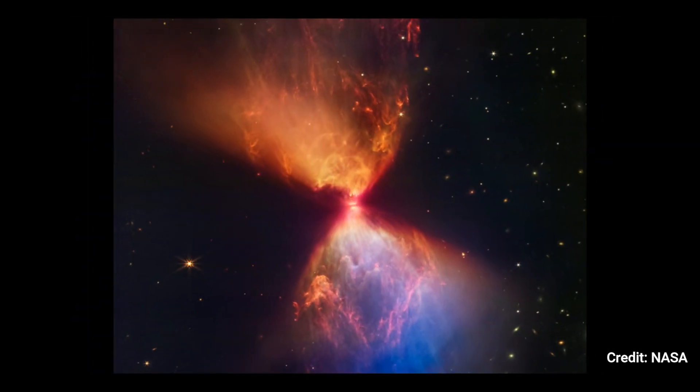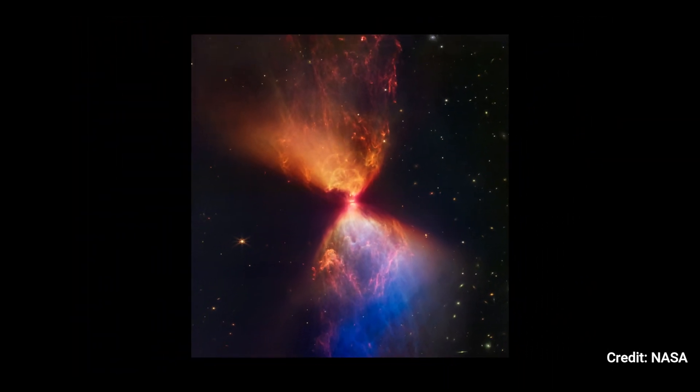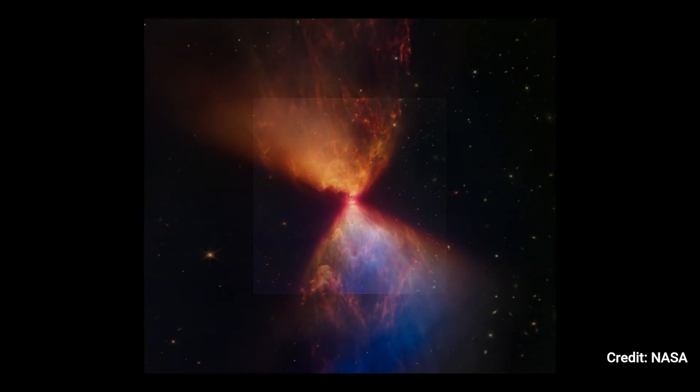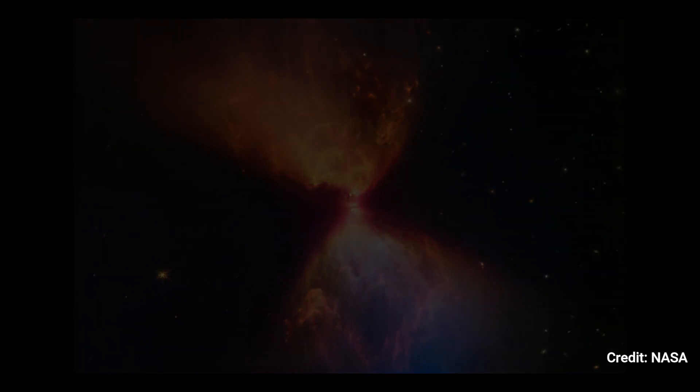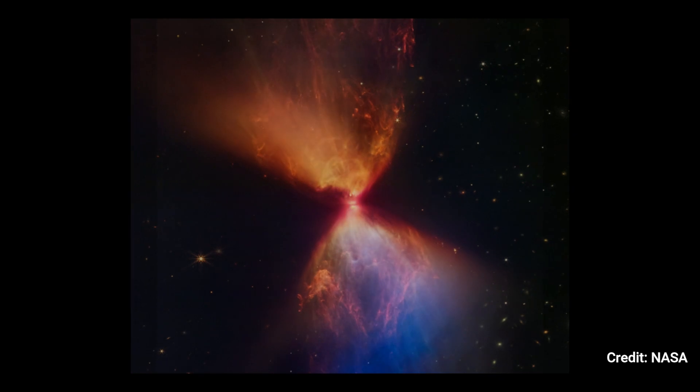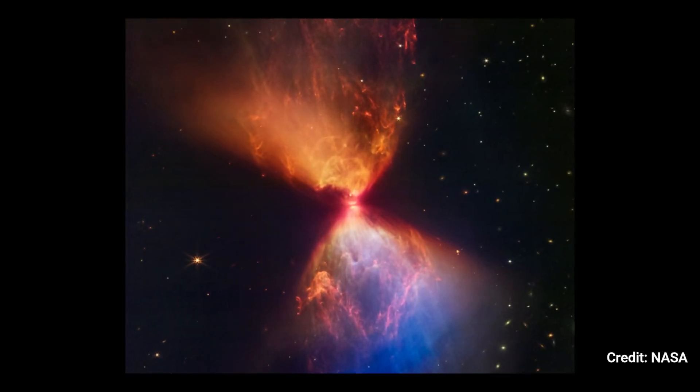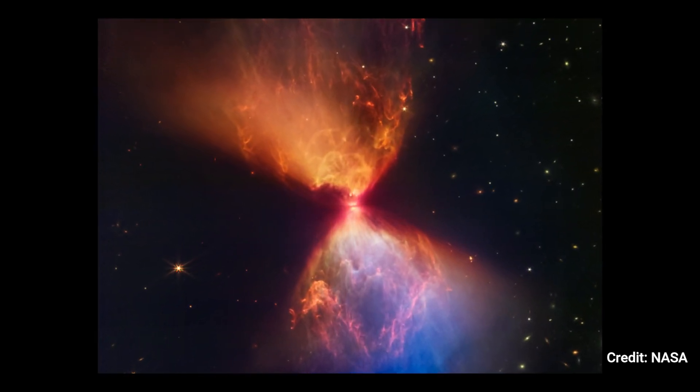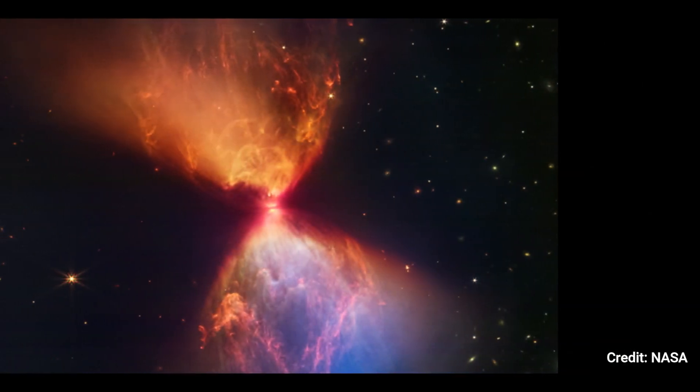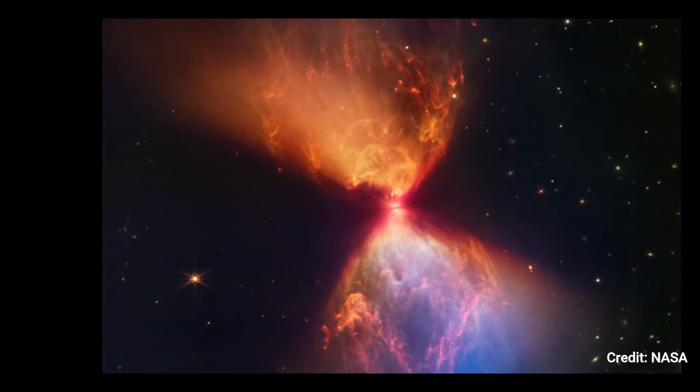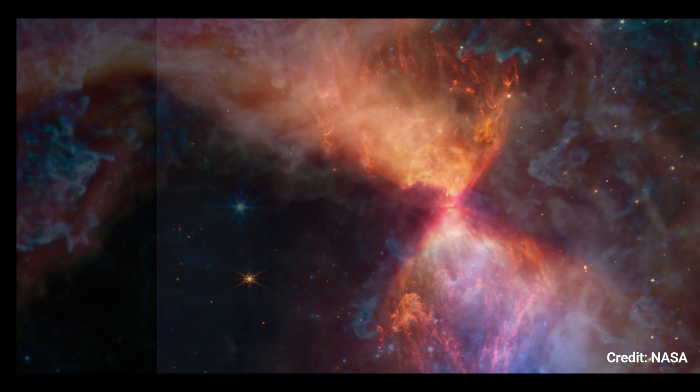Webb also detects filaments of molecular hydrogen that have been shocked by star ejections in the past. The cavity's upper left and bottom right edges appear straight, while the upper right and lower left boundaries appear curved. The lower right region appears blue because there is less dust between it and Webb than the orange regions above it.